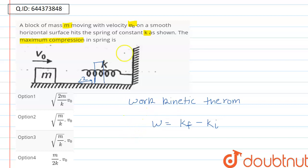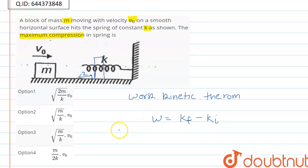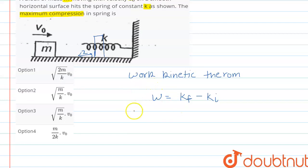So the work done is minus half k x squared. Why I am writing minus? Because the spring is exerting force in this direction. So that is why we are writing minus here.